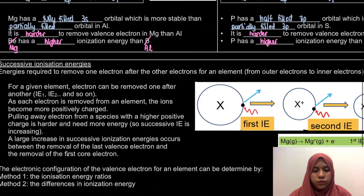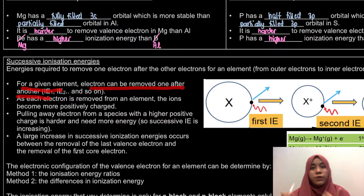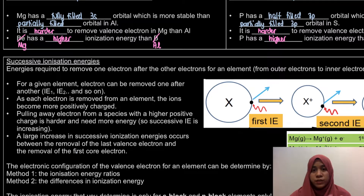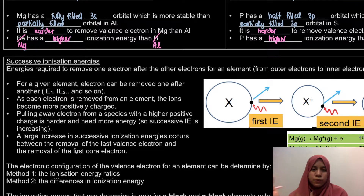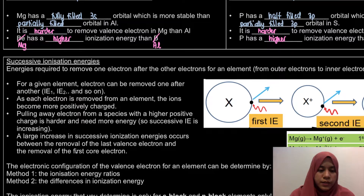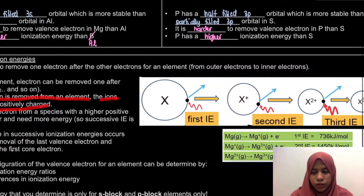For a given element, electrons can be removed one after the other. So we have the first ionization energy, second ionization energy, third ionization energy, fourth ionization energy, and the list goes on. As each electron is removed from an element, the ions become more positively charged.